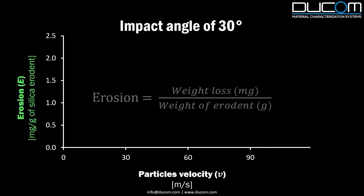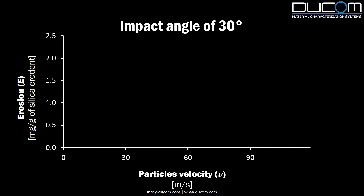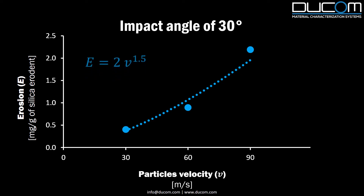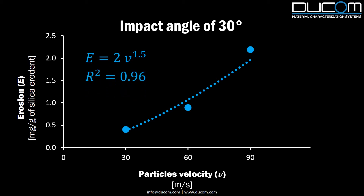Erosion, as determined in terms of weight loss per gram of silica particles, was in a power law relationship with the particle velocity. The power exponent was 1.5. As this exponent is closer to 2, we could assume that a significant part of the particle's kinetic energy was transferred into loss of material, or erosion.